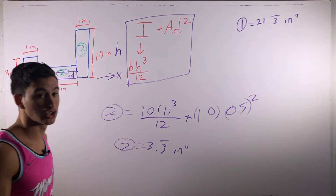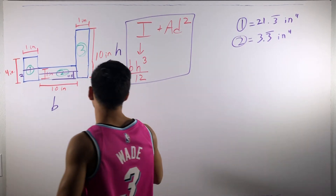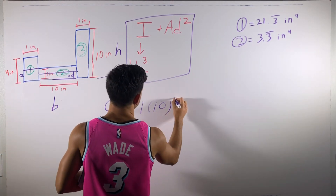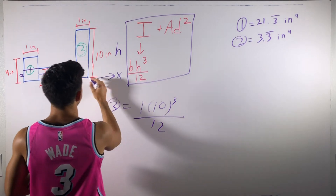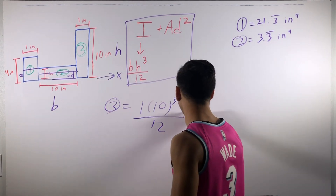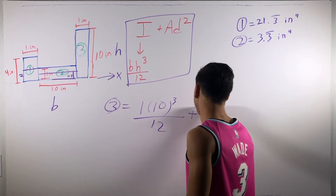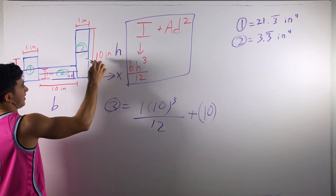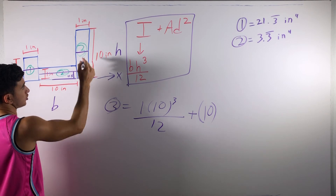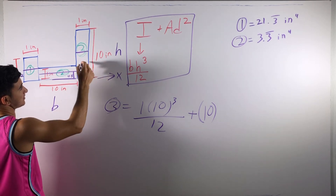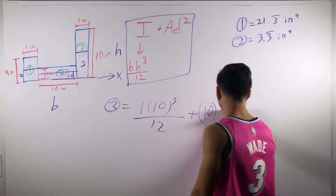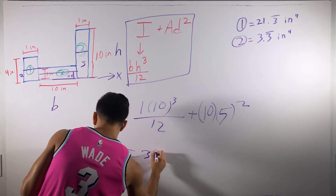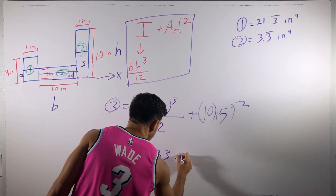For section 3, our base is 1 and our height is 10. That's to the third divided by 12, plus base times height divided by 12, plus 10 times 1 for our area is 10. Our D is the distance between the centroid — which is half the height here — and the x-axis. So if this is 10, half of this is 5. So our D is 5, squared. If you compile all this together, it gives you 333.3 repeating.